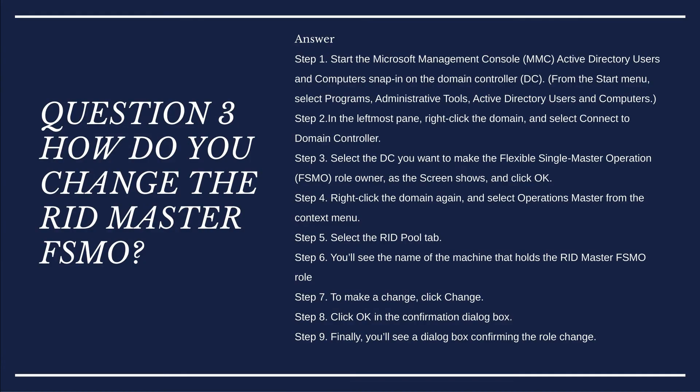Question 3: How do you change the RID Master FSMO? Answer: Step 1 — Start the Microsoft Management Console Active Directory Users and Computers snap-in on the domain controller (DC). From the Start menu, select Programs, Administrative Tools, Active Directory Users and Computers. Step 2 — In the leftmost pane, right-click the domain and select Connect to Domain Controller.